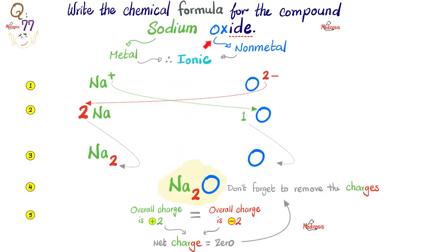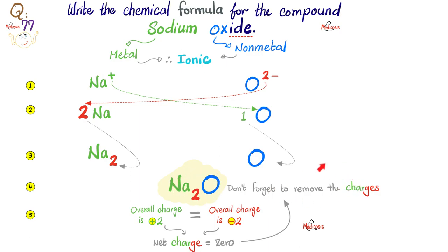In the color diagram: sodium is +1, oxygen is −2. Crisscross — the 2 goes to sodium as a subscript, the 1 goes to oxygen and is ignored. Result: Na₂O. Total positive charges: +2. Total negative charges: −2. They are equal, so the net charge is zero — write Na₂O without any charges.